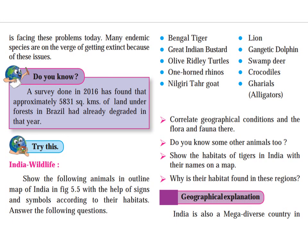Many endemic species are at risk. Endemic means that a particular bird or animal is only found in one specific region, for example only in India and not in any other part of the world. So, if we are not conserving these species properly, we won't find them in the future. A survey done in 2016 found that approximately 5,835 square kilometers of land under forest in Brazil had already degraded in that year.